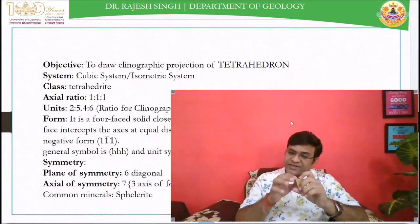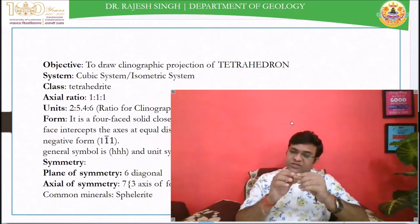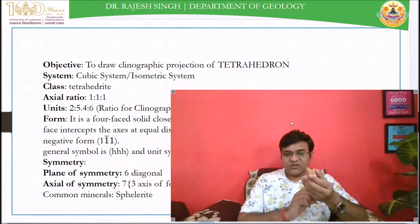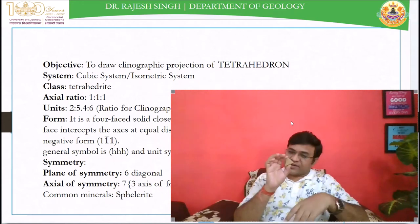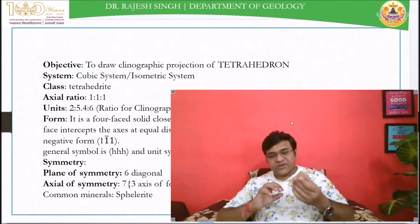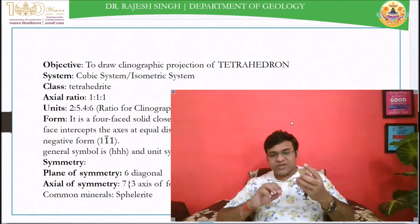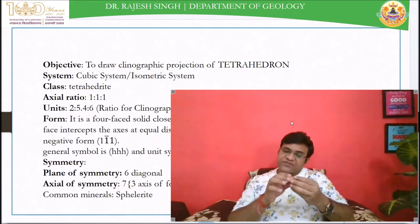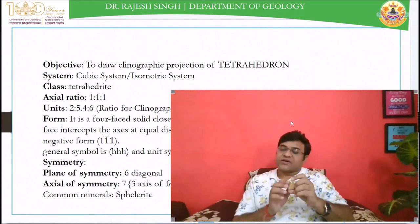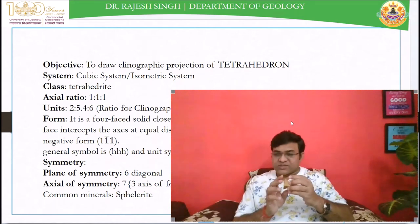It is a closed form. The tetrahedron is a closed form having four equilateral triangular faces, and each face cuts all three crystallographic axes at an equal distance.